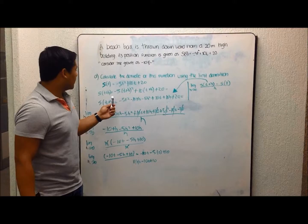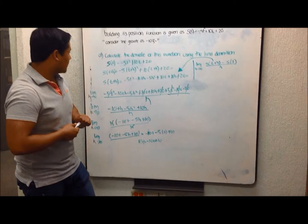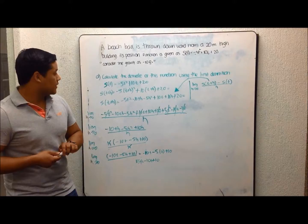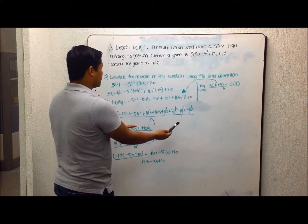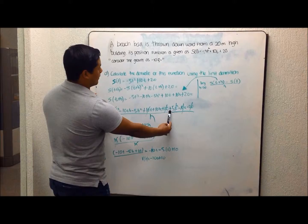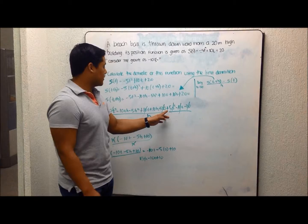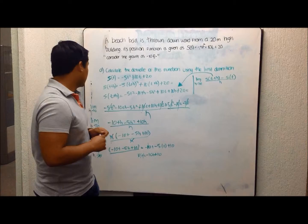So I put -5(t+h)² + 10(t+h) + 20, and I have to expand all these terms. Here I have s(t+h). Now I have to subtract my function, and since there's a minus sign, I reorder the terms, giving me +5t² - 10t - 20.